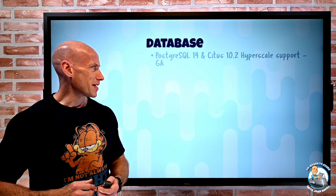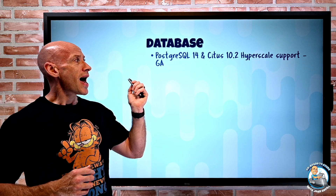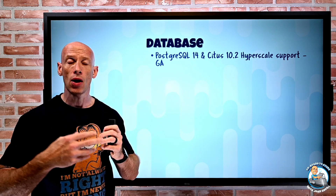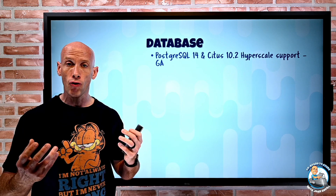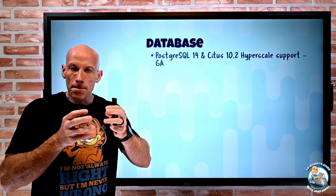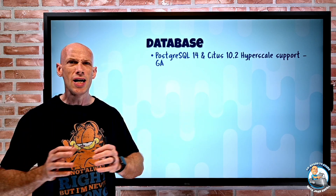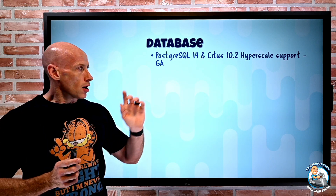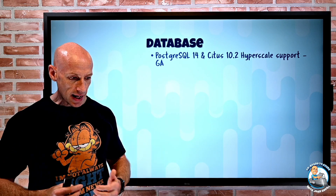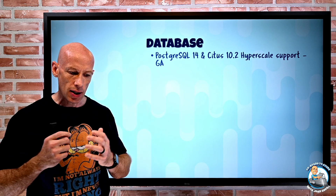On the database side, there are a huge number of updates. PostgreSQL 14 and Citus 10.2 are now supported in the PostgreSQL Hyperscale offering — the Azure managed database using the Citus extension that lets you shard and partition data over multiple nodes for huge scale and performance. With these updates, you get better scaling, a higher number of database connections, better performance for heavier workloads, and a bunch of other feature improvements.